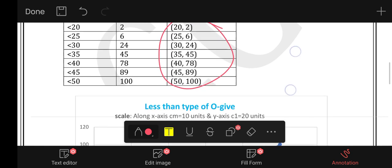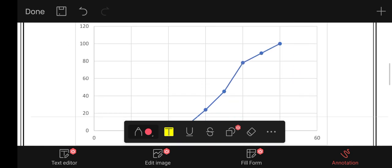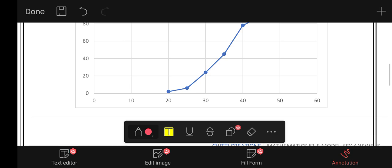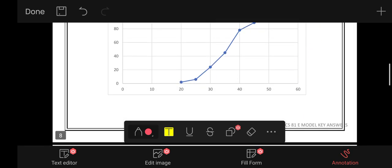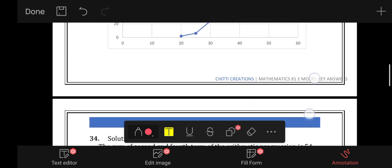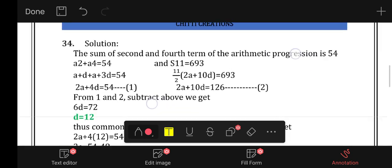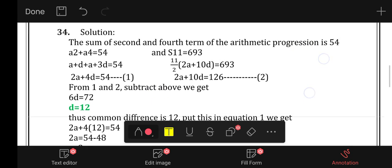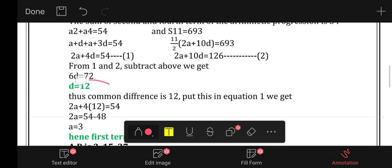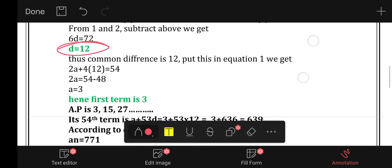Graph with less than type scale. Using elimination method then you will get d is equal to 12, a is equal to 3.